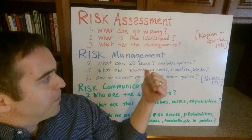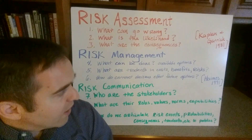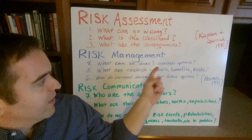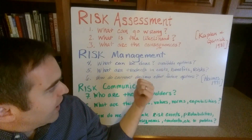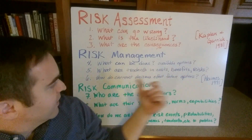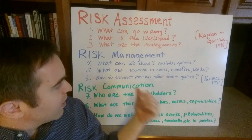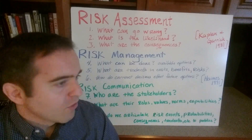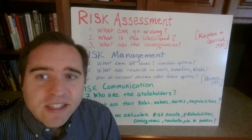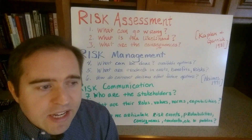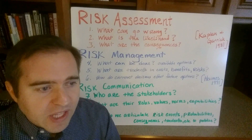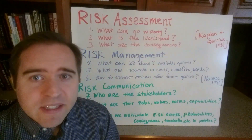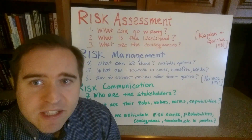Risk management then complements that by asking: what can be done? What options are available? What are the trade-offs in terms of costs, benefits, and risks? How do current decisions affect future options? These questions were proposed by Yaakov Haymes in 1991 in the journal Risk Analysis for describing what it takes to have total risk management or systemic risk management.